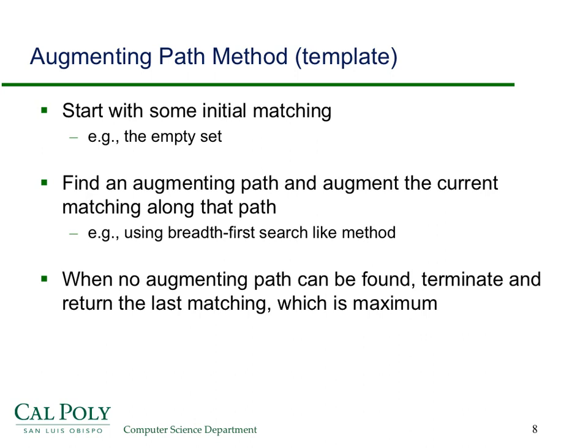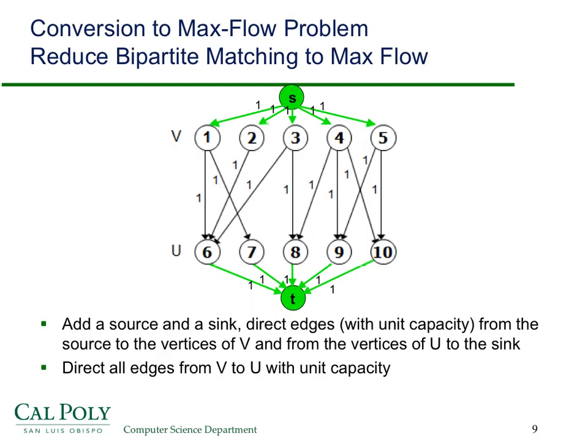So without going into any details, we start with some initial matching, find an augmenting path. And we keep doing that using some kind of breadth-first search method, just like we did with flow networks, until we can't find an augmenting path. And then we terminate and return the last matching, which is maximum. So very reminiscent of network flows.